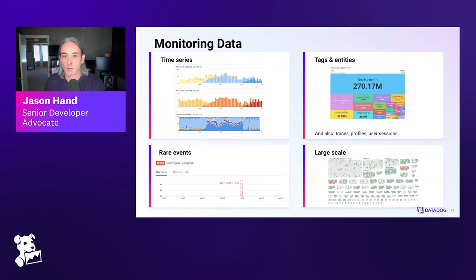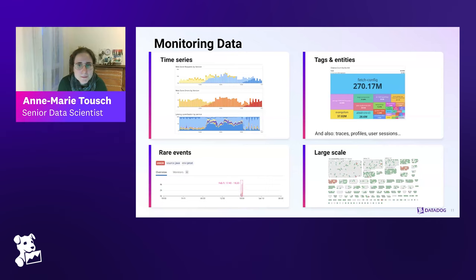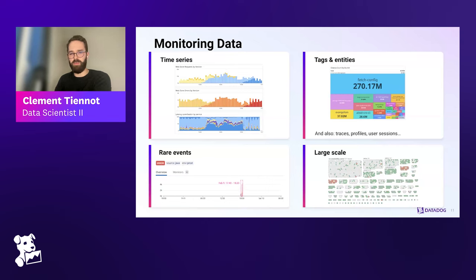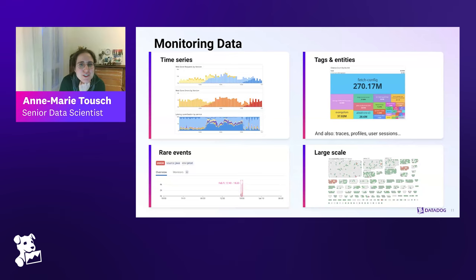Just to clarify on the tags and entities — traces, profiles, and user sessions are other examples of entities. For people who are not as familiar, the green dots in the infrastructure map represent CPU usage. Green is low usage, red is high usage, and gray is in the middle. So having a lot of gray is actually not too bad. You can never tell — it depends on what the CPU is actually doing and what the machine looks like.